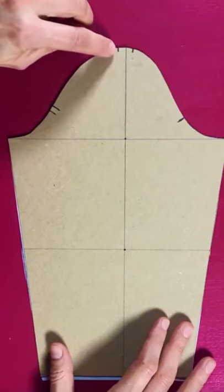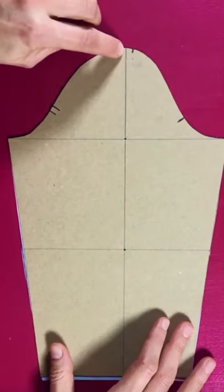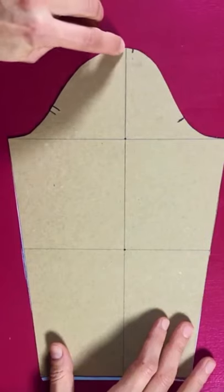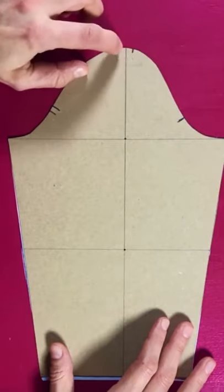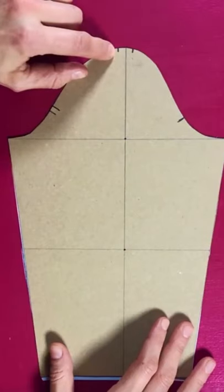You can also notice at the top we've got the top of our sleeve where it meets the shoulder. That's your shoulder point, and then these two notches either side are your ease marks.